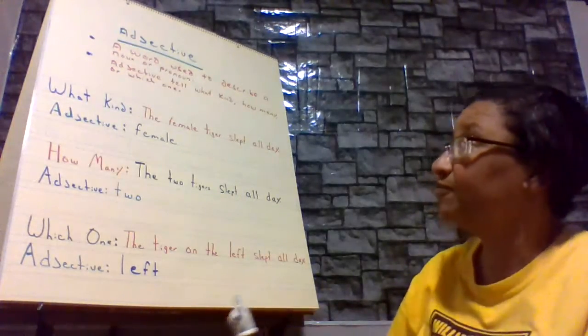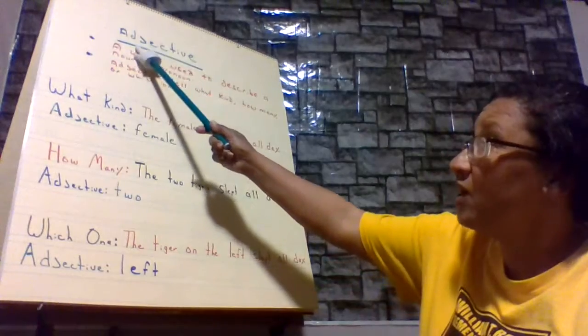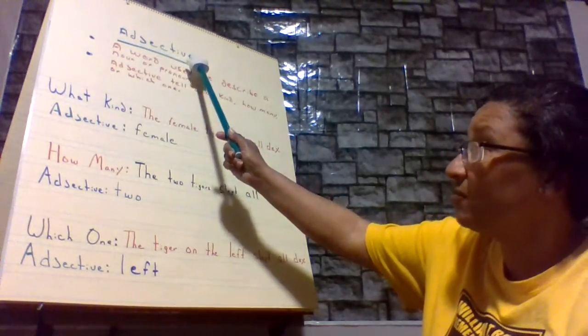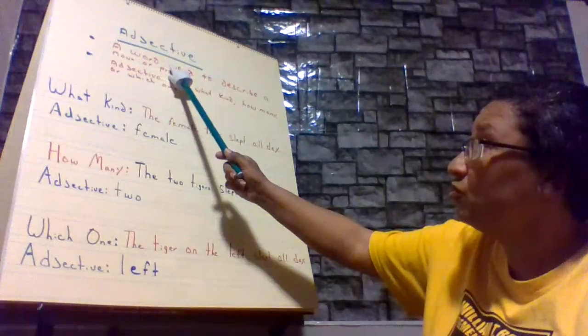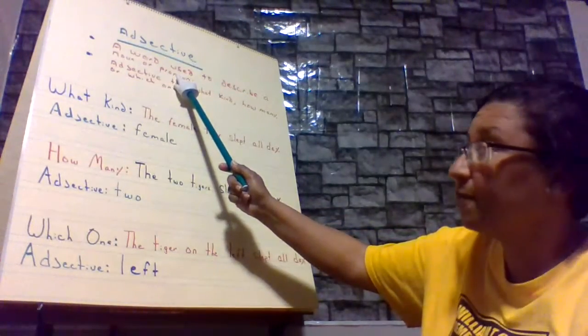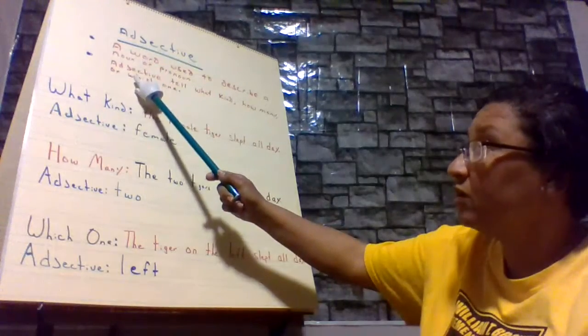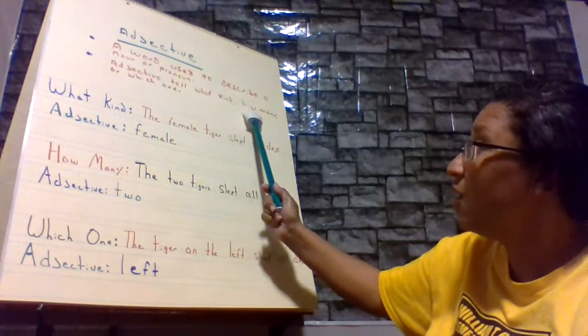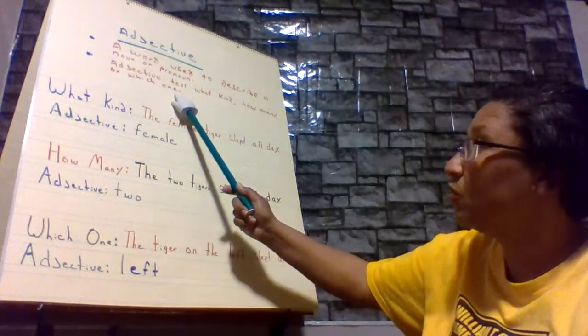I'll reiterate it. Adjective, A-D-J-E-C-T-I-V-E, is a word used to describe a noun or pronoun. Or, it's an adjective that tells what kind, how many, or which one.